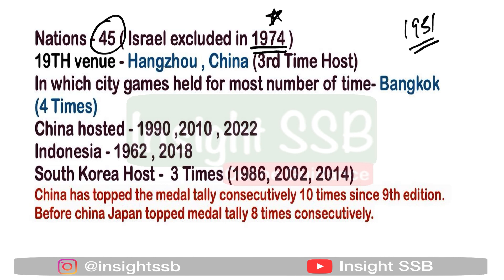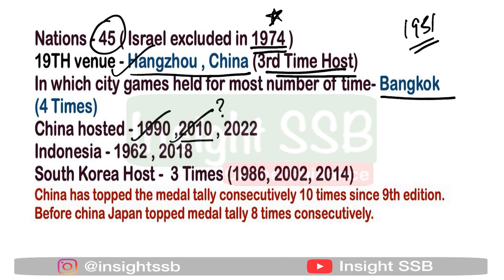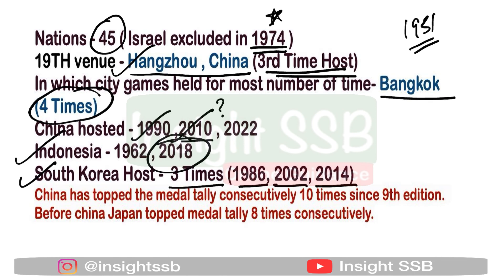The 19th Asian Games will be held in Hangzhou, China — China hosting for the third time. China previously hosted in 1990 and 2010. The city that has hosted the Asian Games the maximum number of times is Bangkok, with four times. South Korea has hosted three times: 1986, 2002, and 2014. Indonesia hosted in 2018 (Jakarta) and had previously hosted in 1962.